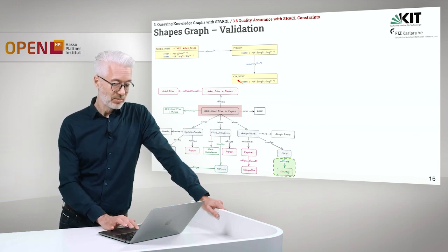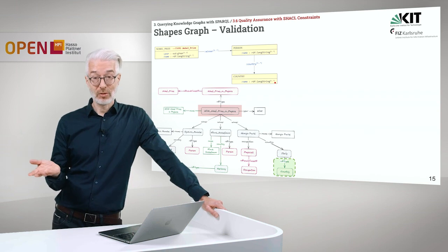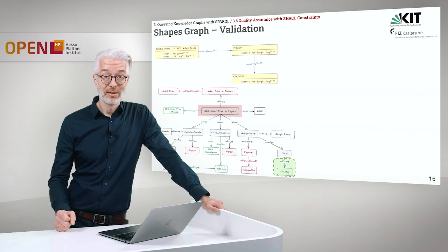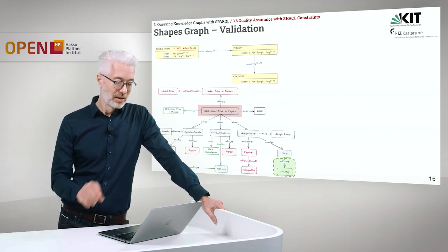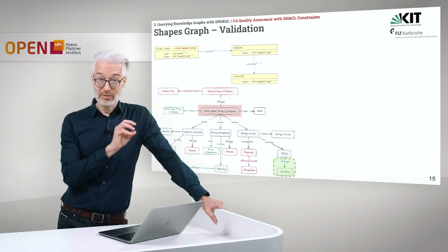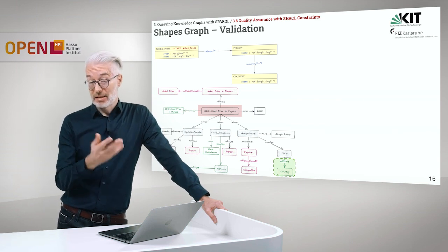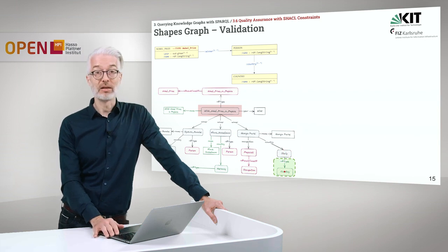We have to connect Italy to the type country, which was missing. This is a type shape. It says this country must connect to something which is of type country. And this is not like the domain/range approach, where we can simply deduce the missing type. In the SHACL world, in the shapes world, we have the closed world assumption. If it is not explicitly given, it cannot be inferred or deduced. So we have to make explicit that Italy is also a country.